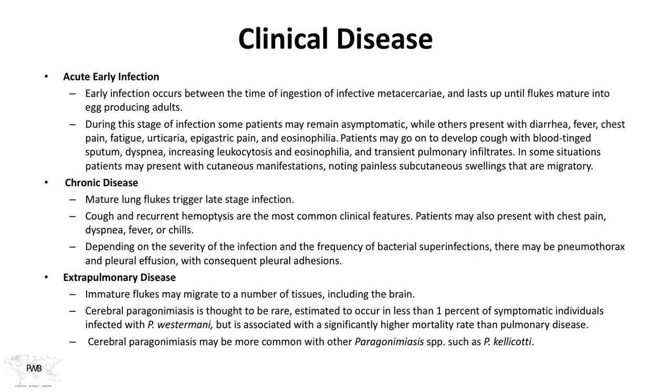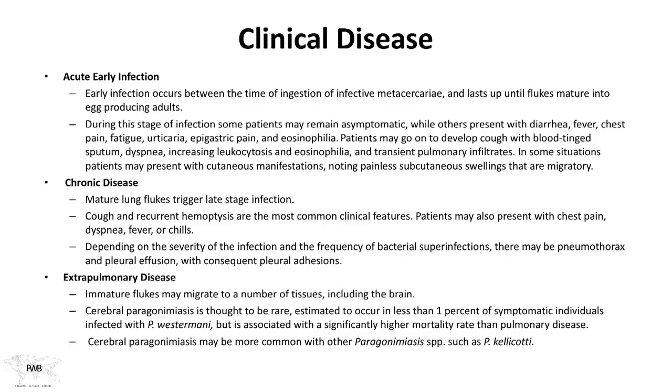Early infection occurs from ingestion of infective metacercariae until flukes mature into egg-producing adults. During this stage, some patients may be asymptomatic, but others can present with diarrhea, fever, chest pain, fatigue, urticaria, epigastric pain, and eosinophilia. Patients may develop cough with blood in sputum, dyspnea, leukocytosis, eosinophilia, and transient pulmonary infiltrates. In some situations, patients may present with cutaneous manifestations — painless swellings that tend to migrate on the skin.